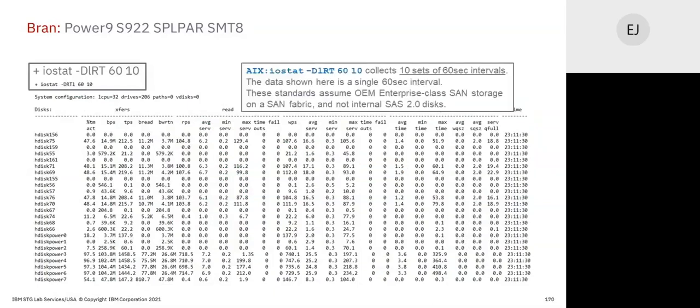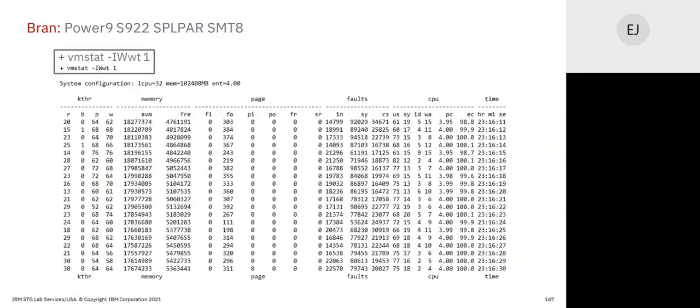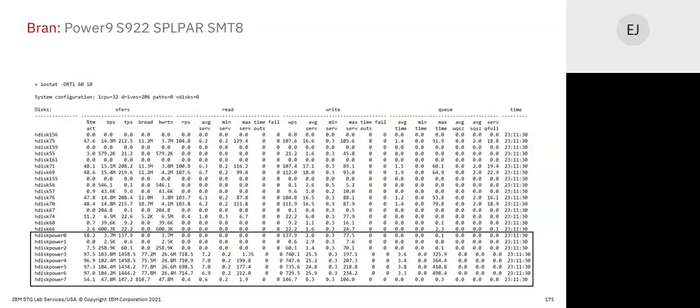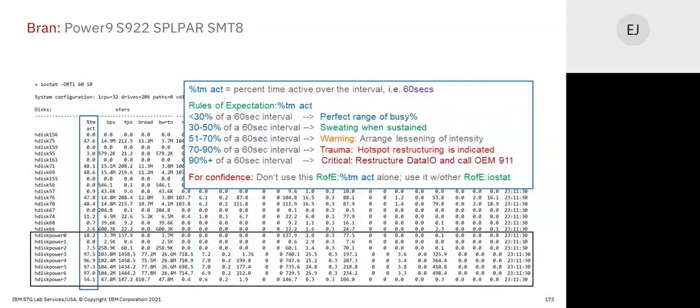10 sets of 60-second intervals — this is just one 60-second interval. The hdisk numbers are pretty busy. In percentages over a 60-second interval, assuming a 5-channel SAN storage you want to be less than 30 percent busy. These guys are overwhelmed — way above 90 percent. Remember, we're adjusting to the technology of today, not the old SCSI standards. The old SCSI standard says 70 percent or less is fine — this is not SCSI. We're on RAID 5, RAID 6, RAID 10 across the fabric, so these standards must adjust to the technology.